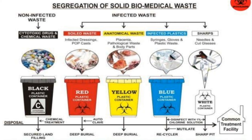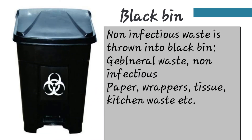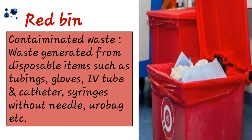There are five types of bins: black, red, yellow, blue, and white. We do segregation to separate infectious from non-infectious waste so that treatment is easy and infection is prevented. The black bin holds general non-infectious waste like wrappers, paper, tissue, and kitchen waste — the 85% non-infectious general waste goes into the black bin. The red bin holds contaminated waste from disposable items such as IV tubings, gloves, catheters, syringes without needle, and urine bags.